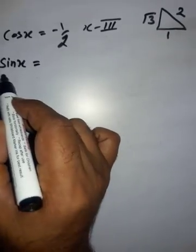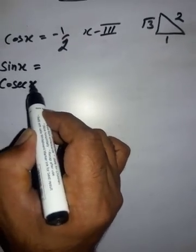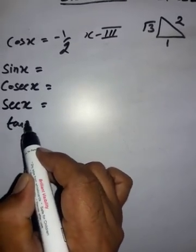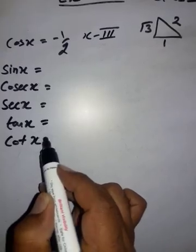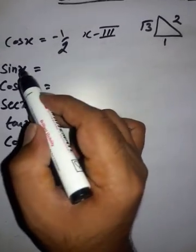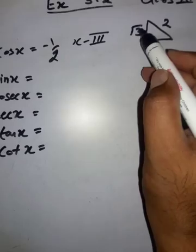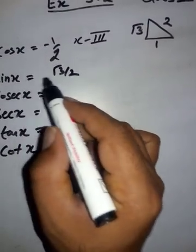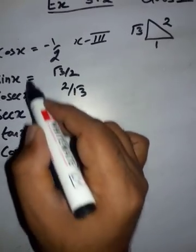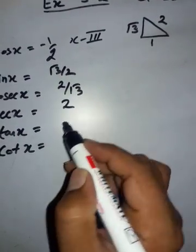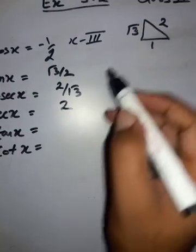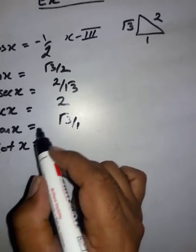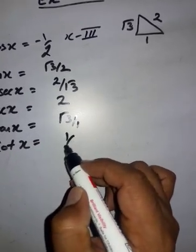The other ratios are: sin x = perpendicular/hypotenuse = √3/2. Cosec x is reciprocal of sin = 2/√3. Sec x is reciprocal of cos = 2/1 = 2. Tan x = perpendicular/base = √3/1 = √3. Cot x is reciprocal of tan = 1/√3.